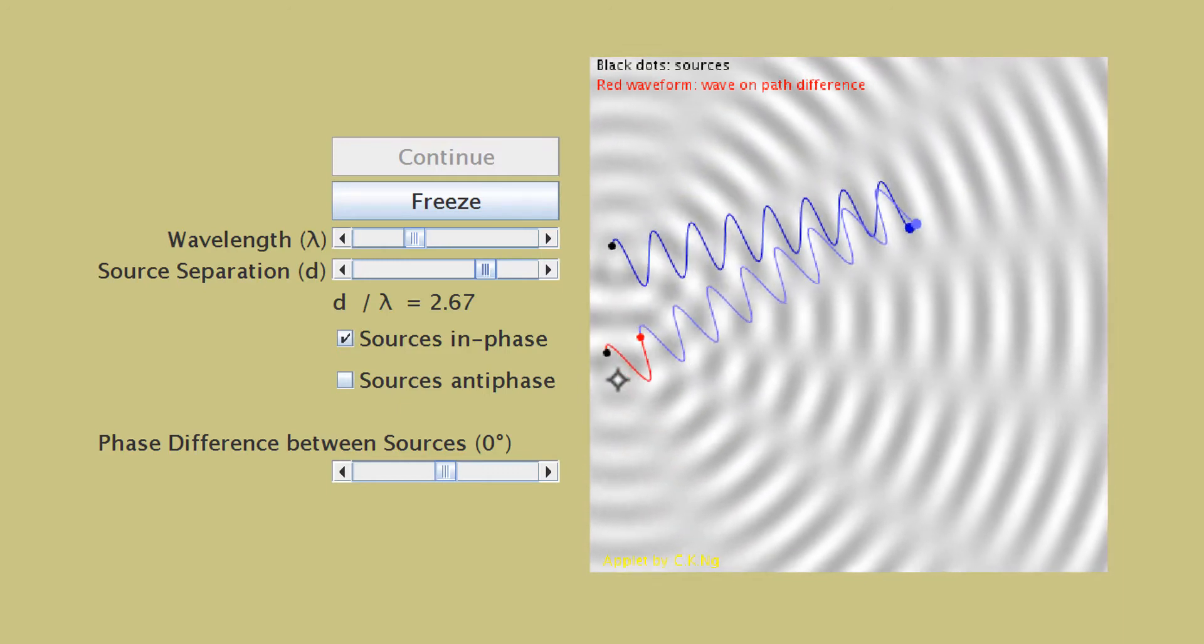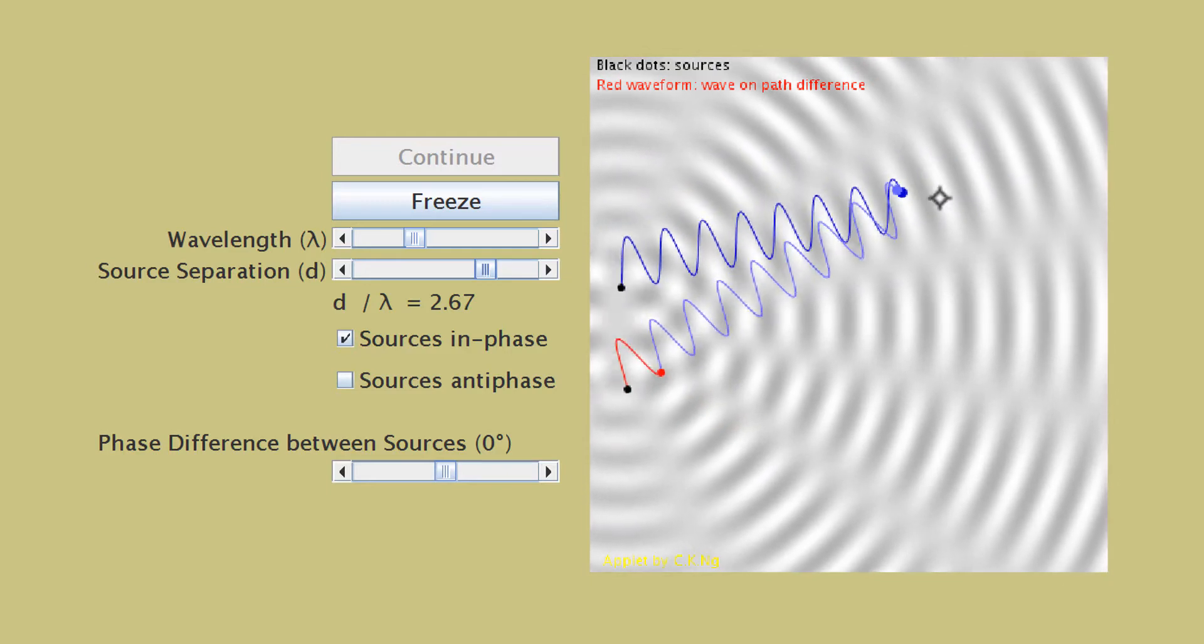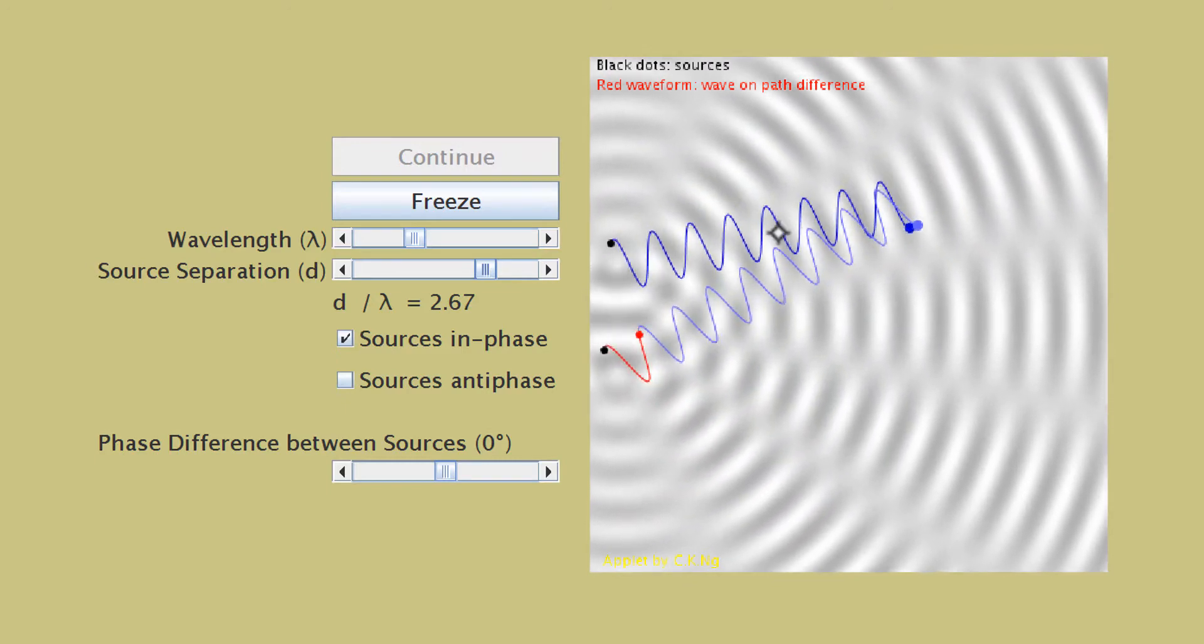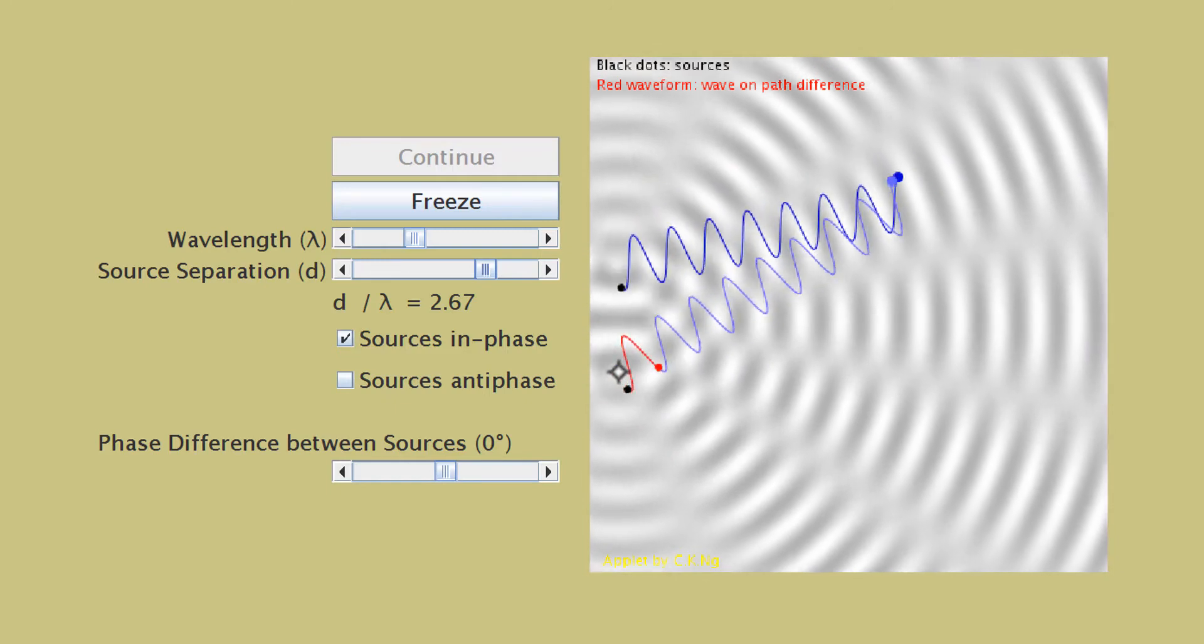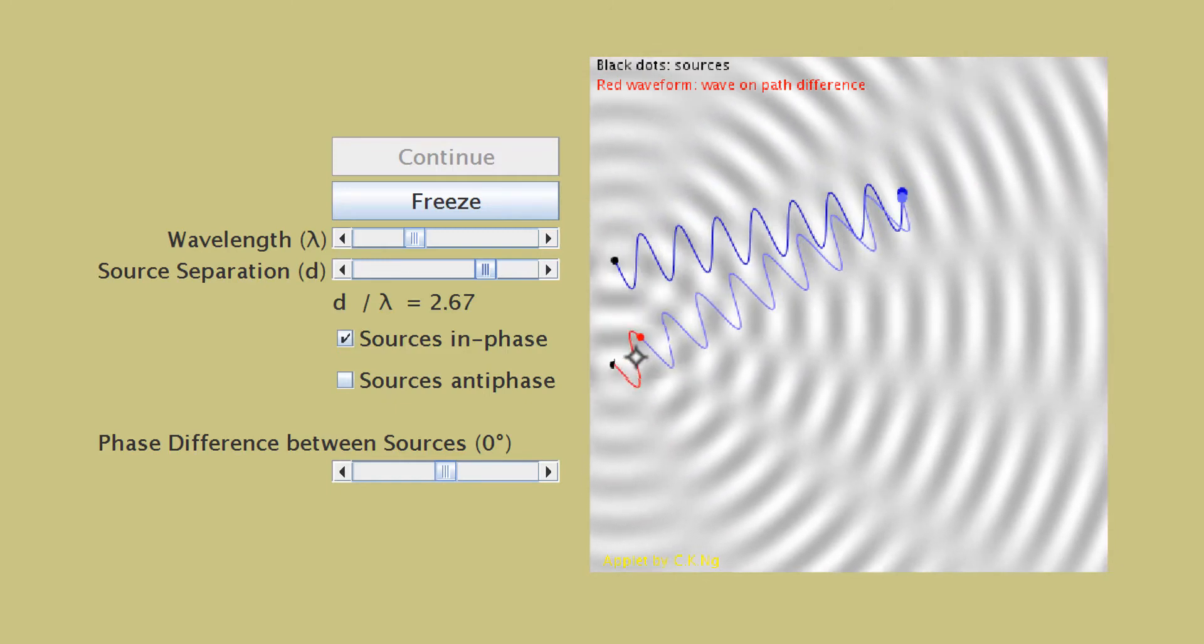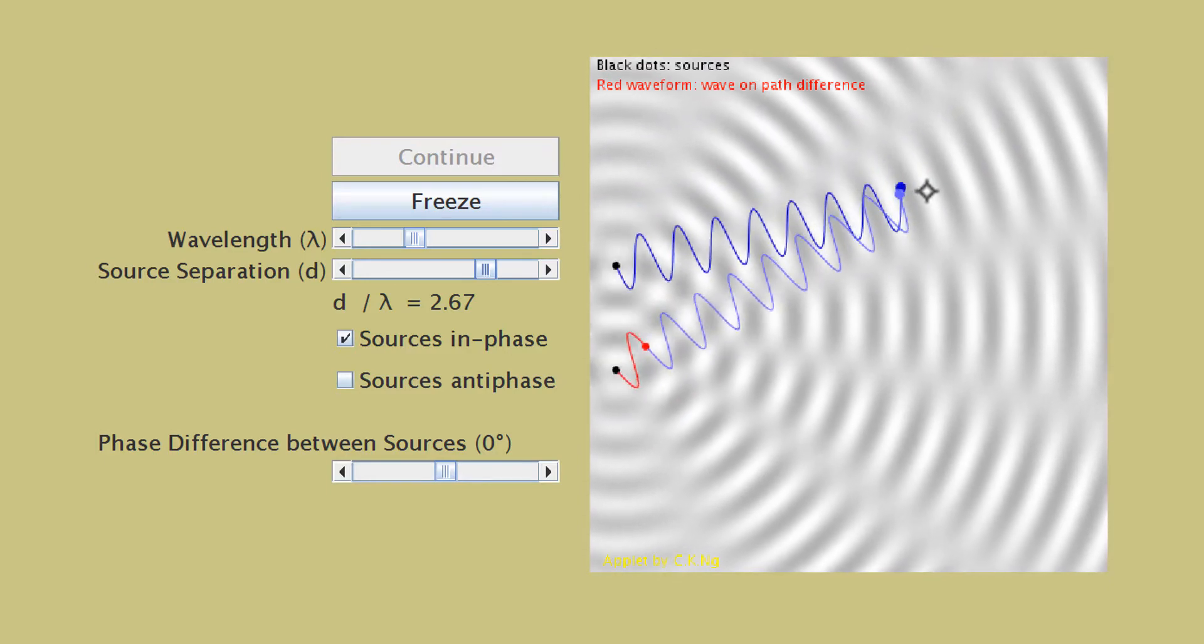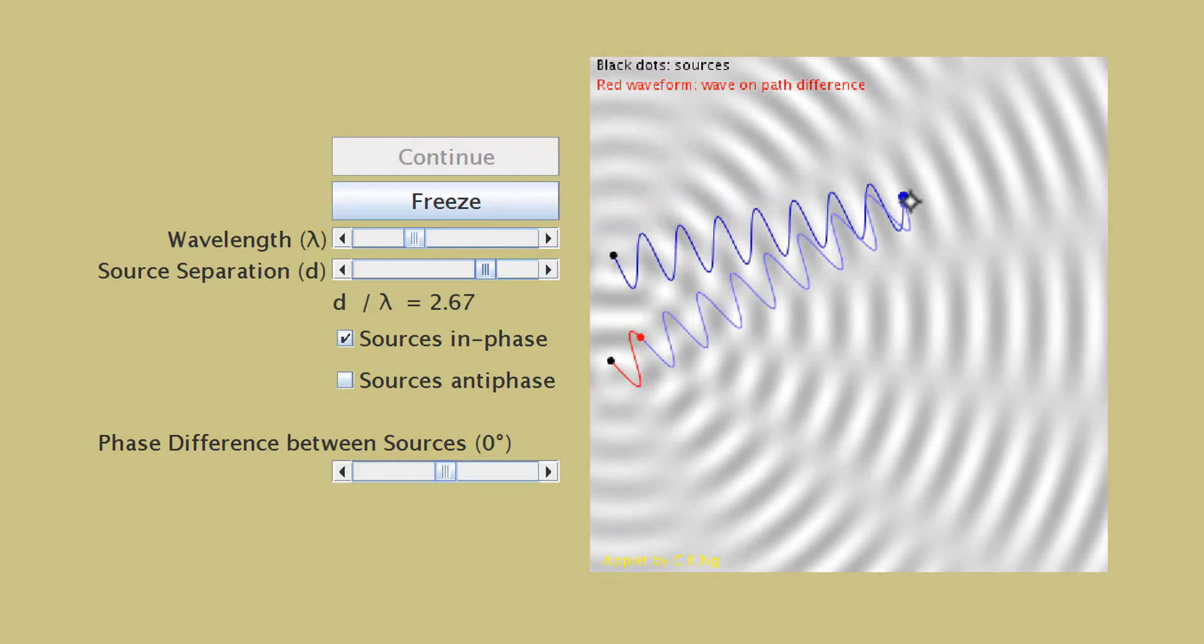Even though this wave has to travel a longer distance to arrive at the destination compared to the other one, the two waves still arrive in phase here. The reason is because the path difference is one complete wavelength. So when the path difference is one complete wavelength, the two waves will still arrive in phase at the destination.